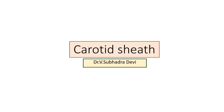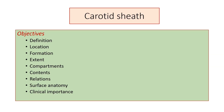Dear students, let us discuss about the carotid sheath. It will be discussed under the following headings: definition, location, formation of carotid sheath, the extent of carotid sheath, the compartments into which it is divided, the contents within the carotid sheath, the relations — immediate relations and structures that are superficial and deep to it — structures crossing it, structures piercing it, and the surface anatomy of the carotid sheath and its clinical importance.